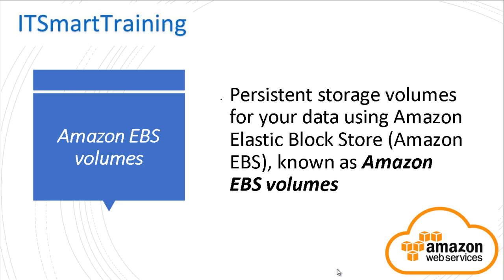Amazon EBS volume is a persistent storage volume for your data using Amazon Elastic Block Storage, or Amazon EBS. It is the storage of the virtual machine where the actual operating system is stored — just like our hard disk. If we have a laptop or desktop, we have a hard disk to load the operating system and applications. In Amazon, that hard disk is called Elastic Block Storage, or EBS.